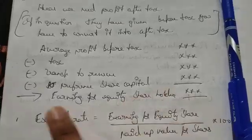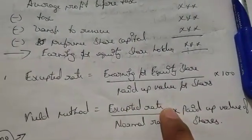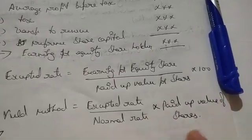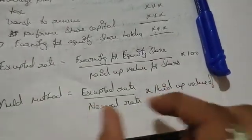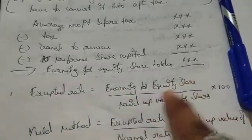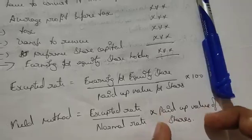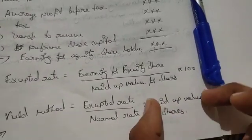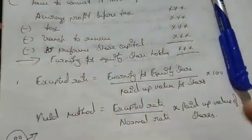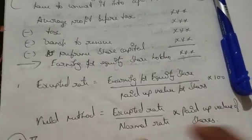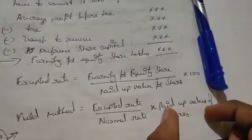Expected rate also you have to calculate. The formula for yield method is: expected rate divided by normal rate into paid up value of shares. Paid up value of shares - how much is each costing? 10 rupees, 5 rupees, 8 rupees - that amount you will take here. Expected rate you are calculating here. The amount of the share, each costing rupees 10, that amount you will take in the formula. You will get expected rate - 0.3.5 or something. Then normal rate of return - 10, 11, 12 in the question - and into paid up value of the share. This is done, you will get yield method.